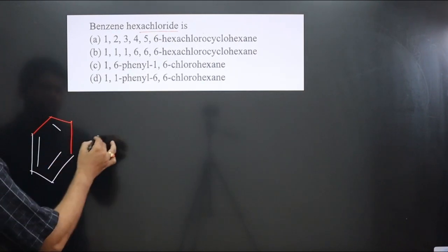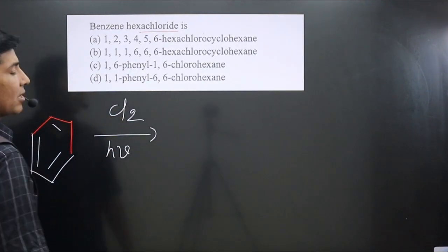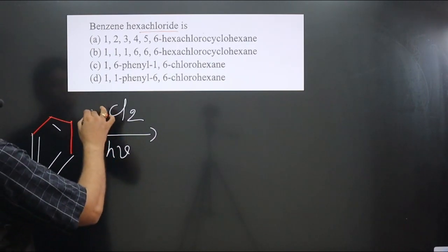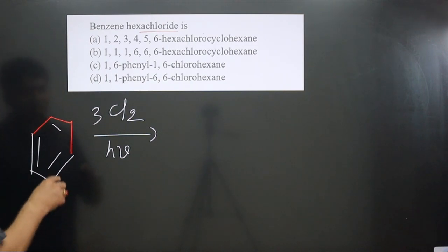Here we have Cl2 and this reaction is taking place in the presence of sunlight. We can take three molecules so this reaction will be completed via free radical mechanism. This bond is broken and one Cl will attach here, one Cl will attach here.